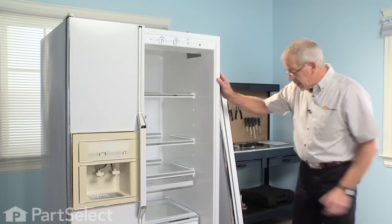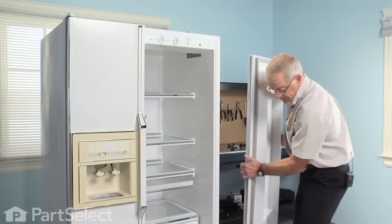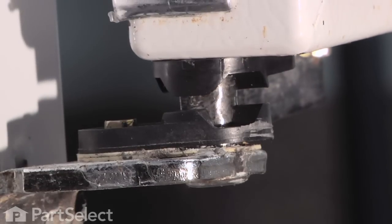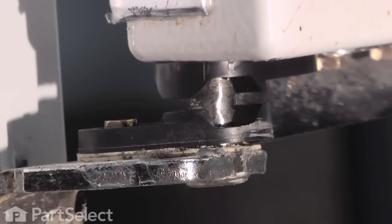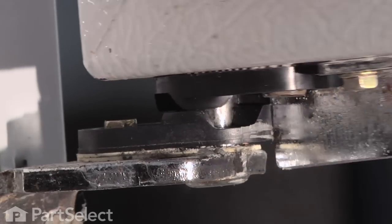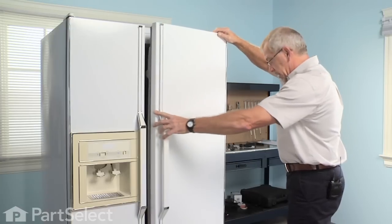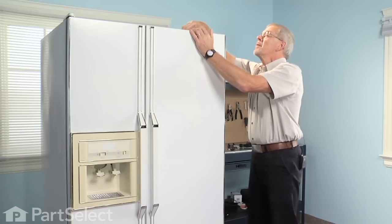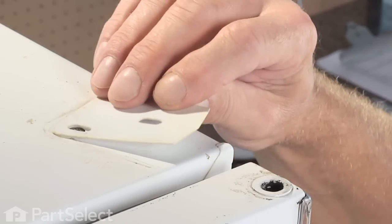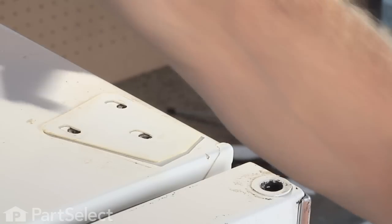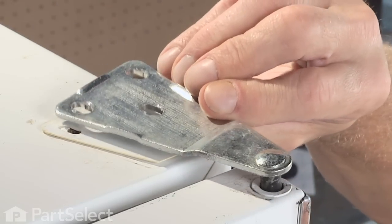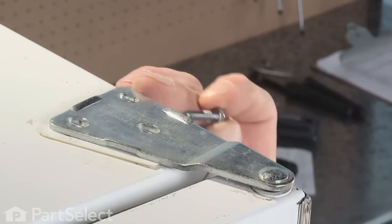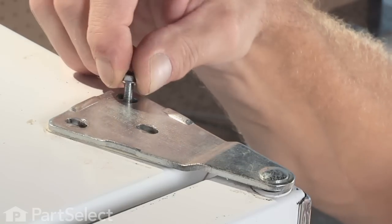Now that we've replaced both cams we're ready to reinstall the door. Simply line up the hole in the bottom of the door with the lower door pin. Rotate the door into place. Now we're ready to put on the top hinge, make sure the gasket is in place. We'll just start the three five-sixteenths hex head screws by hand.